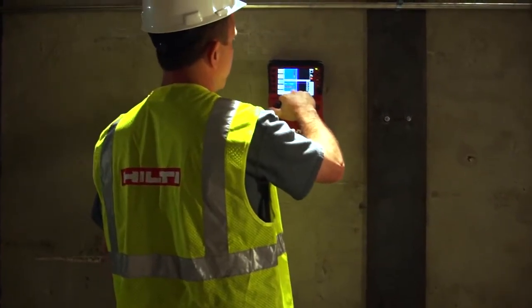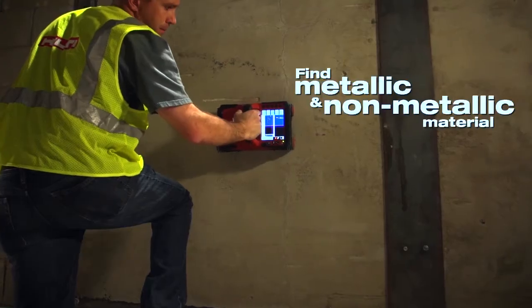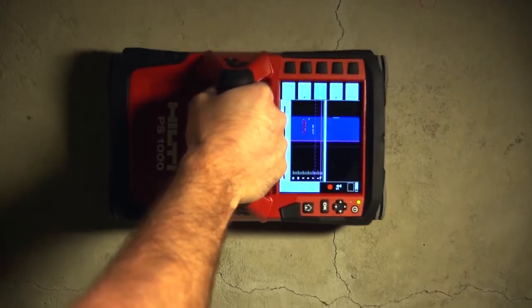The X-Scan's quick scan function allows you to mark the concrete in real time. Whether it's metallic or non-metallic, the PS-1000 can locate it and keep your job moving forward.